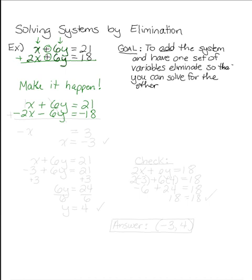Now when you add the system, you will see that these 6y's cancel. And we can add the x's and get 1x minus 2x gives us negative x equals 3. That means x equals negative 3.